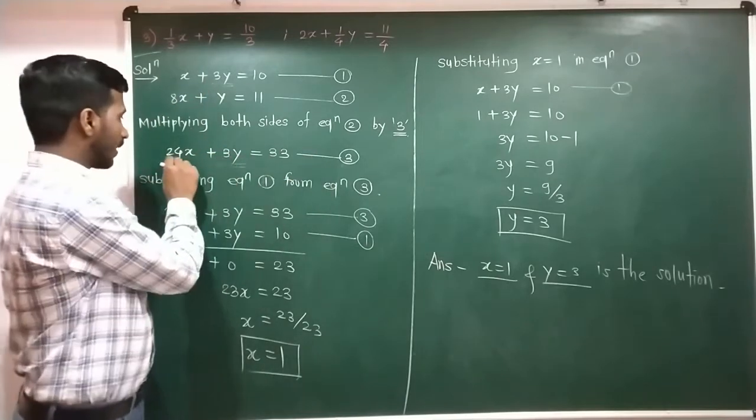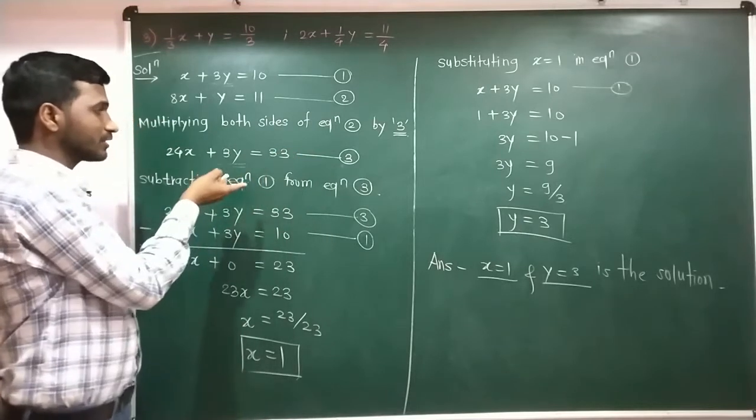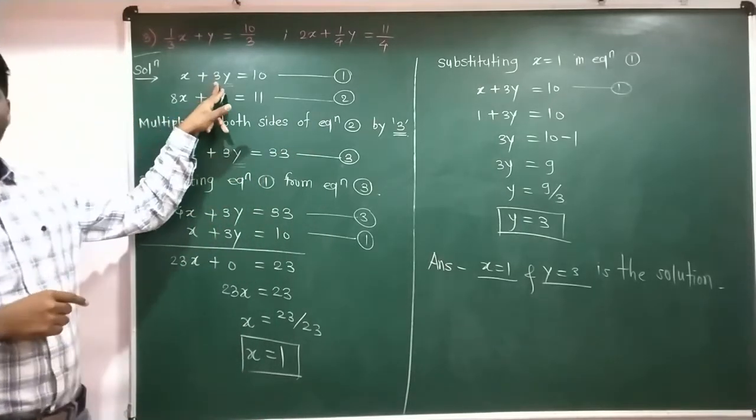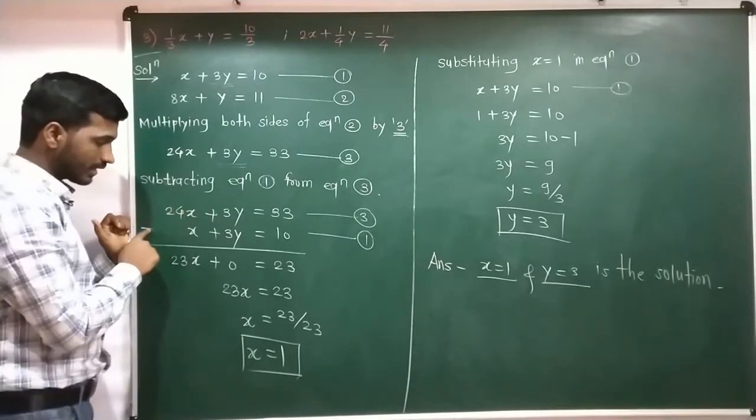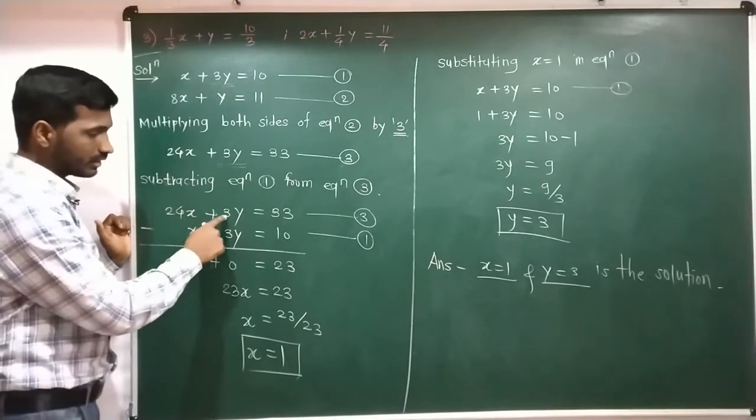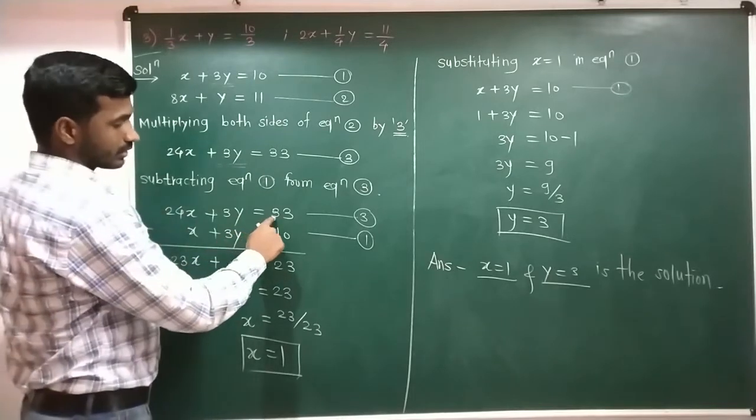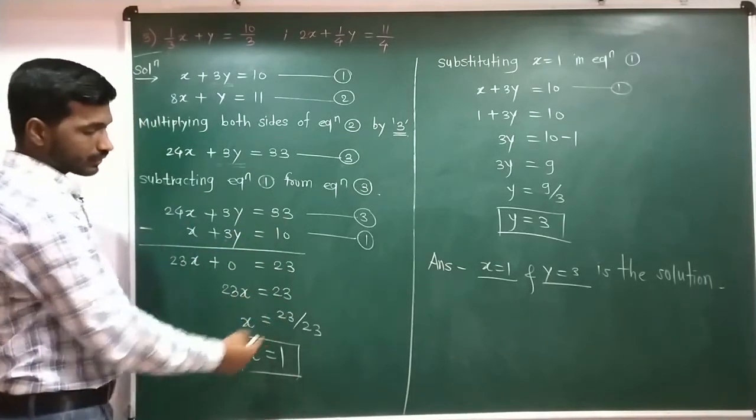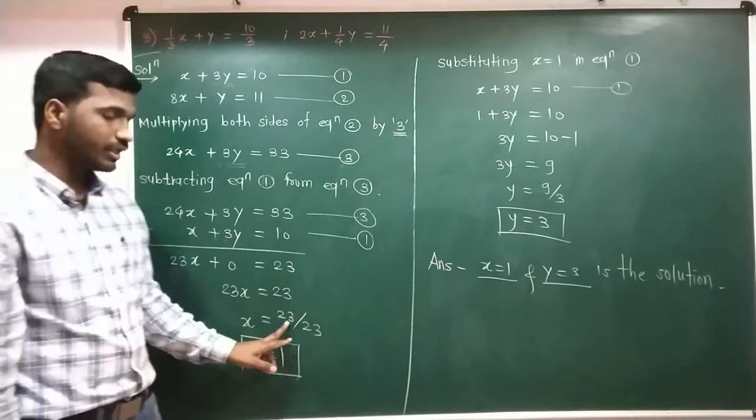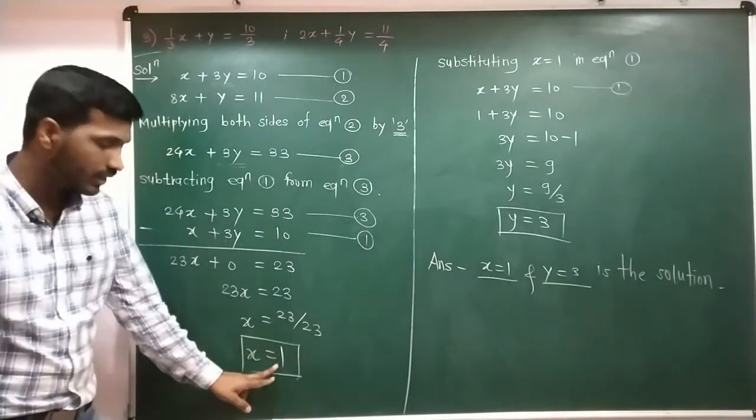Equation 3: subtraction. 24x minus x is 23x. 3y minus 3y is 0. 33 minus 10 is 23. So 23x equals 23, meaning x equals 23 upon 23, x equals 1.